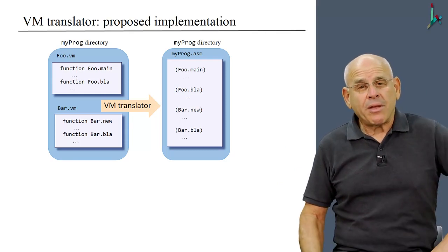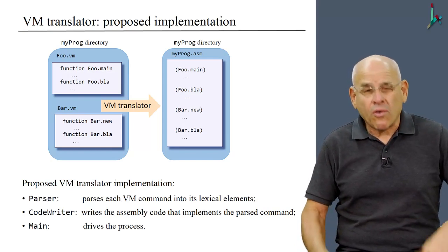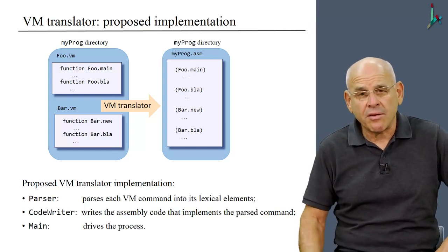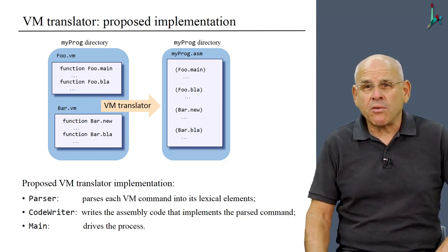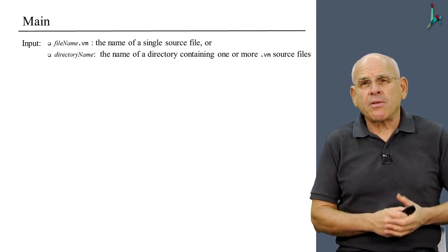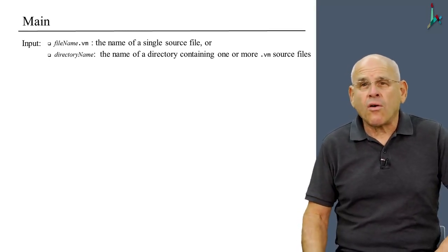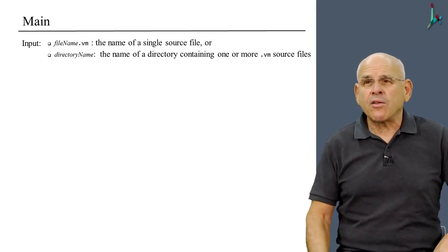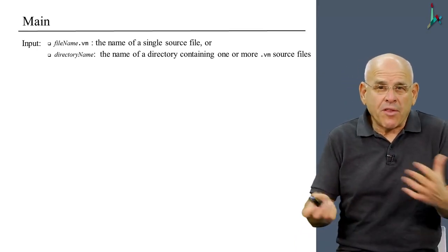So the proposed implementation that I outline here is exactly the same as, or contains exactly the same modules that we had in the previous project: Parser, code writer, and main. And let us describe every one of these modules in turn. The main module receives as input some string that stands either for a single file or for the name of a directory, or folder if you will, that contains presumably one or more VM files. So it's one of the two.